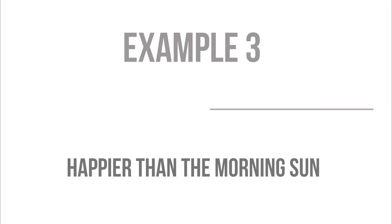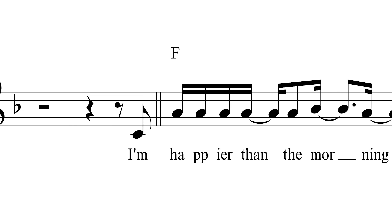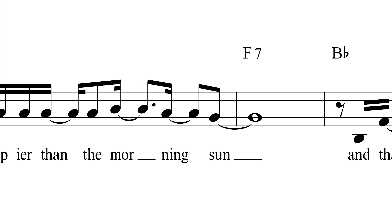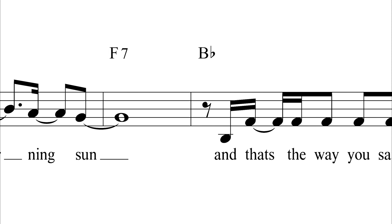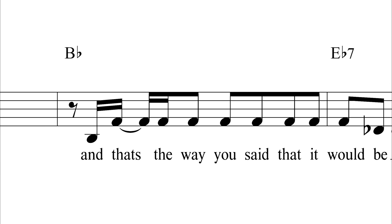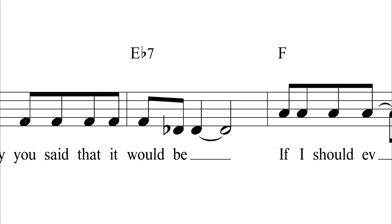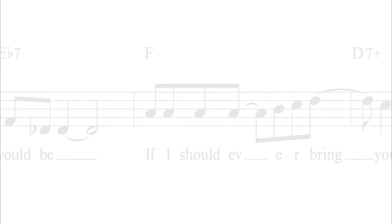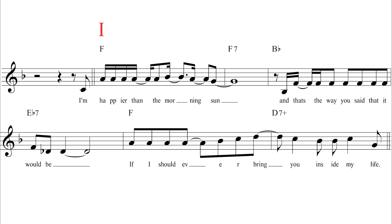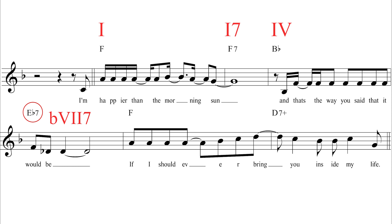Example 3: Happier Than The Morning Sun, 1972, from Music of My Mind. The same progression again, this time in F major. So chord I, chord I7, chord IV, and then flat 7, 7. In this case in F: F to F7, B-flat, and then E-flat 7 that goes back to the tonic.